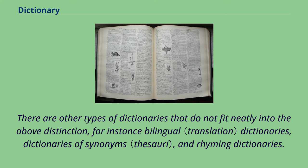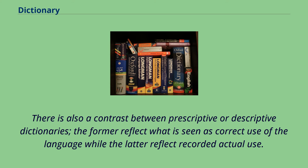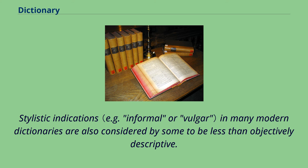There are other types of dictionaries that do not fit neatly into the above distinction, for instance bilingual dictionaries, dictionaries of synonyms, and rhyming dictionaries. The word dictionary is usually understood to refer to a general-purpose monolingual dictionary. There is also a contrast between prescriptive or descriptive dictionaries: the former reflect what is seen as correct use of the language while the latter reflect recorded actual use.